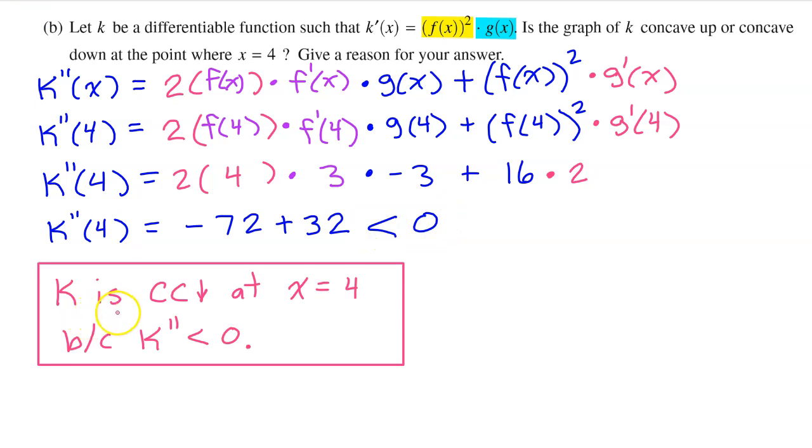So here is your summary and justification. k is concave down at x equals 4 because k double prime is negative.